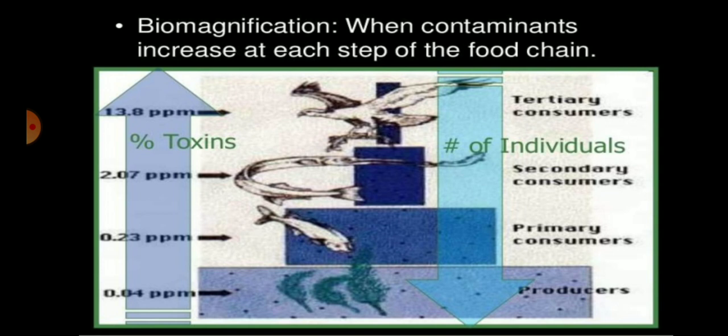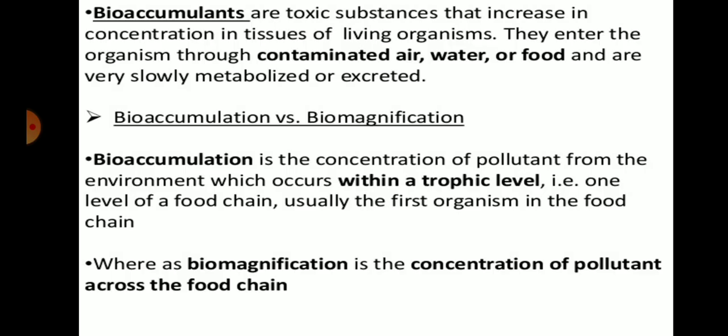Another term is bioaccumulation — the increase of toxic substances in concentration in the tissue of living organisms. They enter the organism through contaminated air, water, or food and are very slowly metabolized or excreted, because there is no enzyme system in the body to break them down. Bioaccumulation is the concentration of toxic substances that increases in the tissue of living organisms.